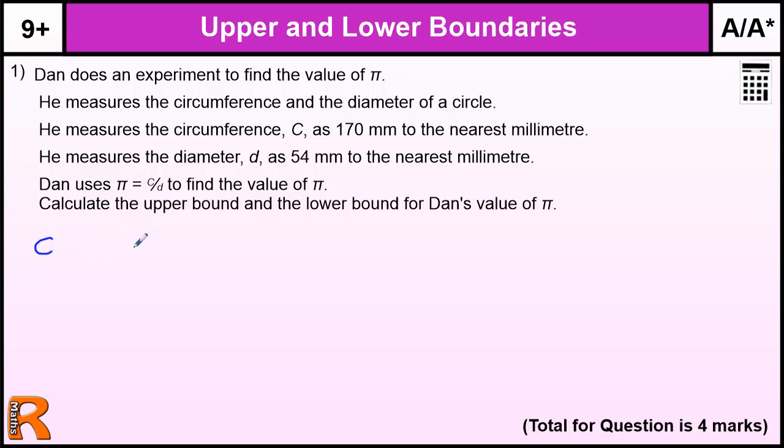If we look at the circumference C, that's equal to 170 millimeters to the nearest millimeter. So that's the nearest whole number. The next number up from 170 is 171, and the next number down is 169. So the boundaries are the halfway points between these two values. So we've got 169.5 and 170.5. Now, I know there's going to be discussion about is this the maximum value, should you use 170.49 recurring and all that sort of stuff. But essentially, you should use the 0.5 boundaries.